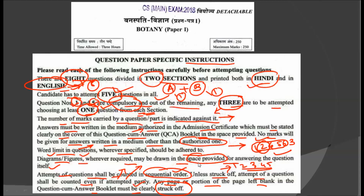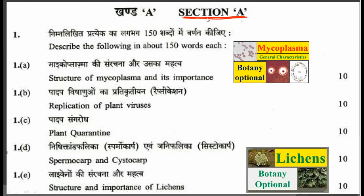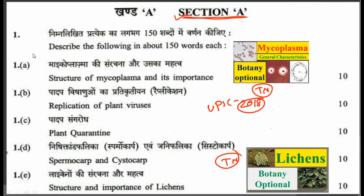Now let's move towards the questions. This question paper is divided into 2 sections — section A and section B. Question number 1 is divided into 5 sub-questions: A, B, C, D, and E. As you know, question number 1 is a compulsory question. The question says: describe the following in 150 words each — that is, we have to write the answer in 150 words only.